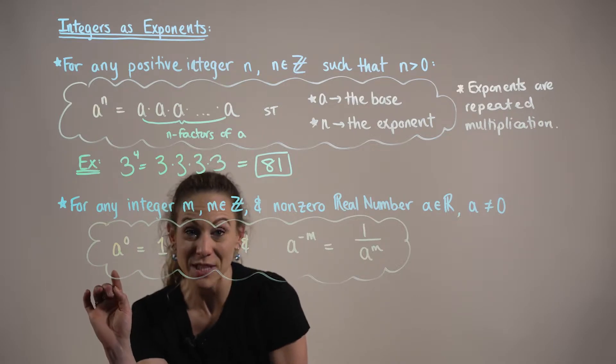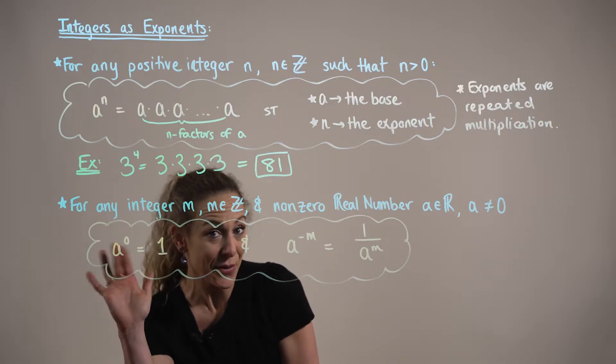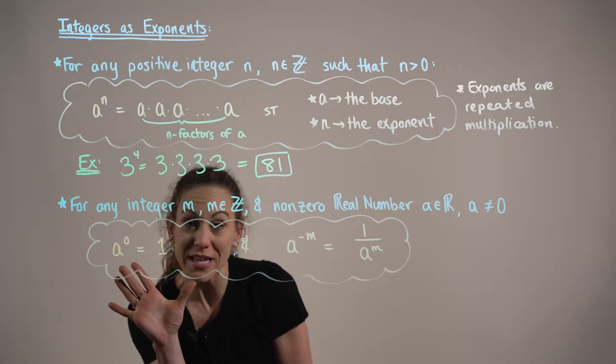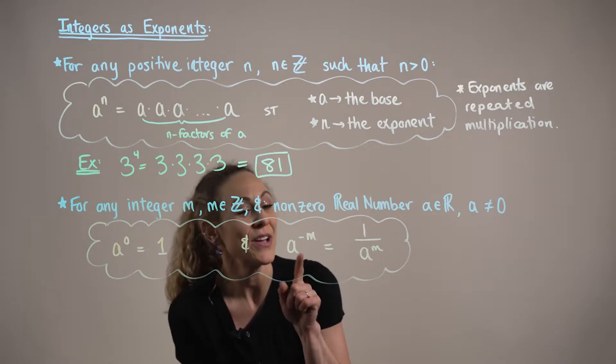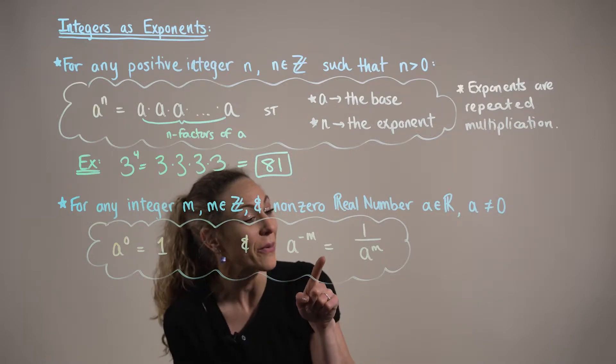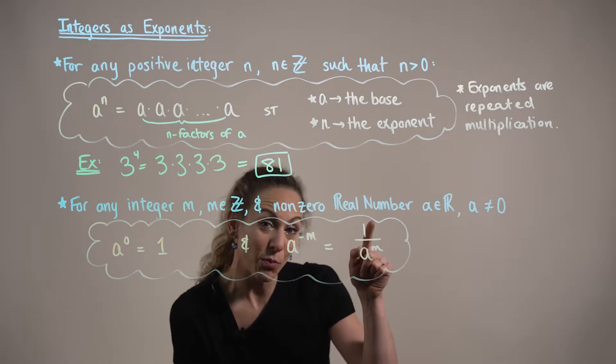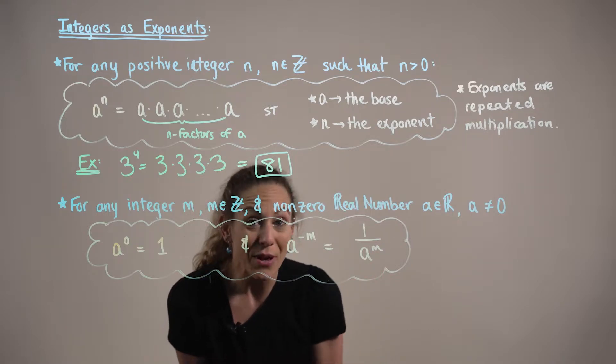When we have an exponential expression a to the zero power, we know that this is equal to one. And when we have a negative exponent, a to the minus m power needs to be rewritten as one by a to the m so that we can evaluate.